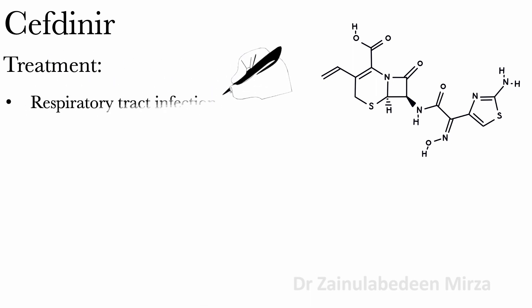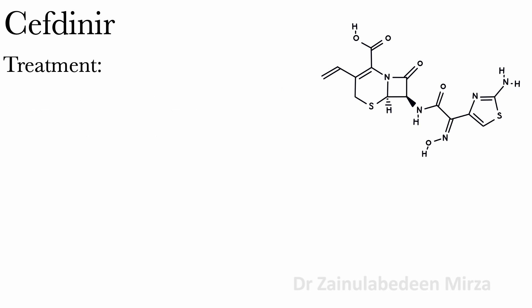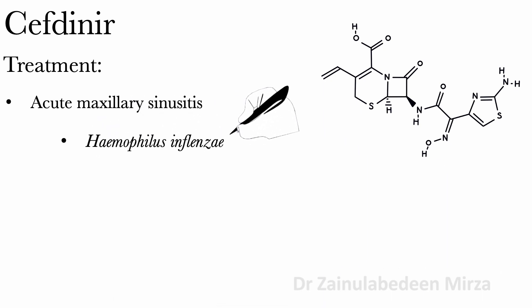Cefdinir is used for respiratory tract infections, including acute exacerbation of chronic bronchitis caused by Haemophilus influenzae or others. It is also used for acute maxillary sinusitis caused by Haemophilus influenzae or others.